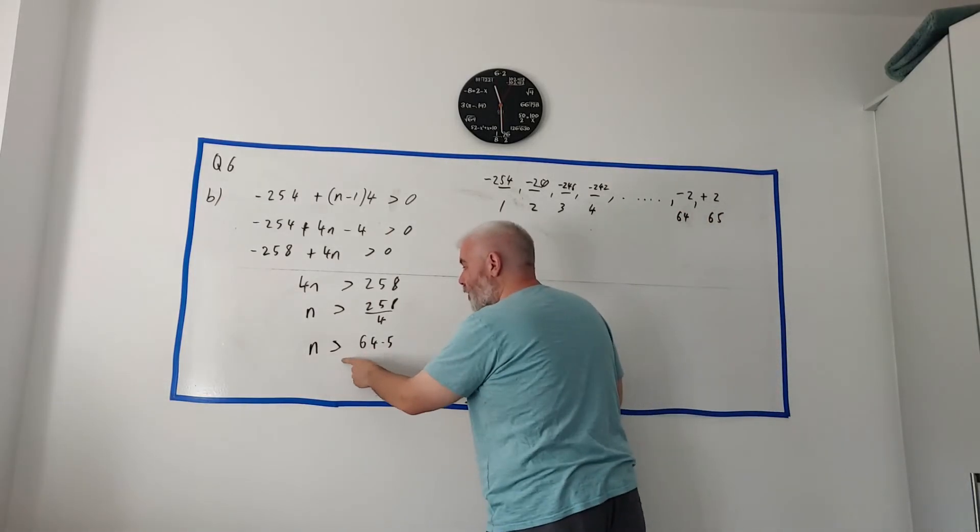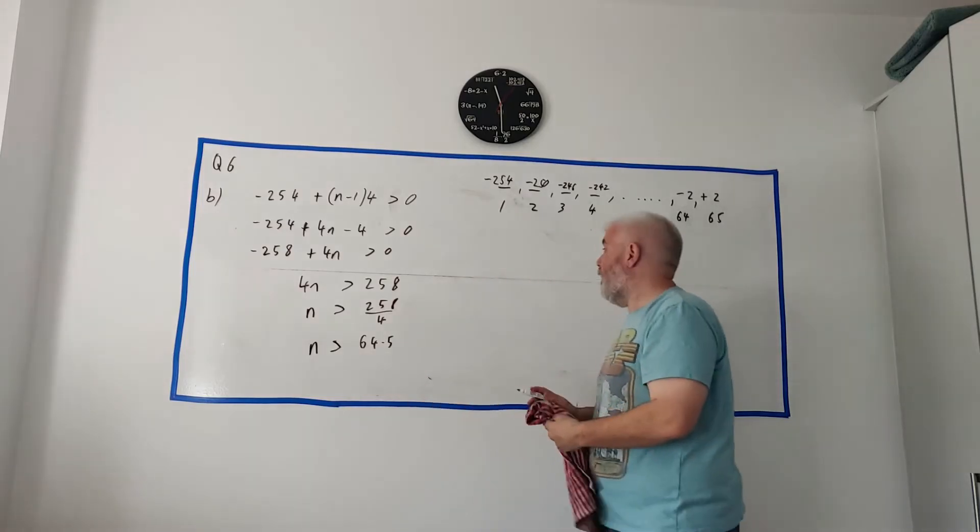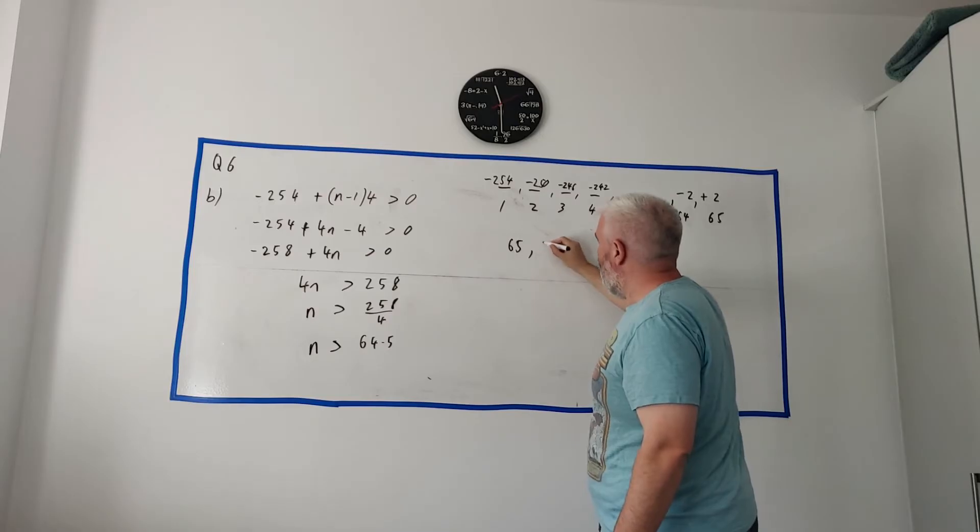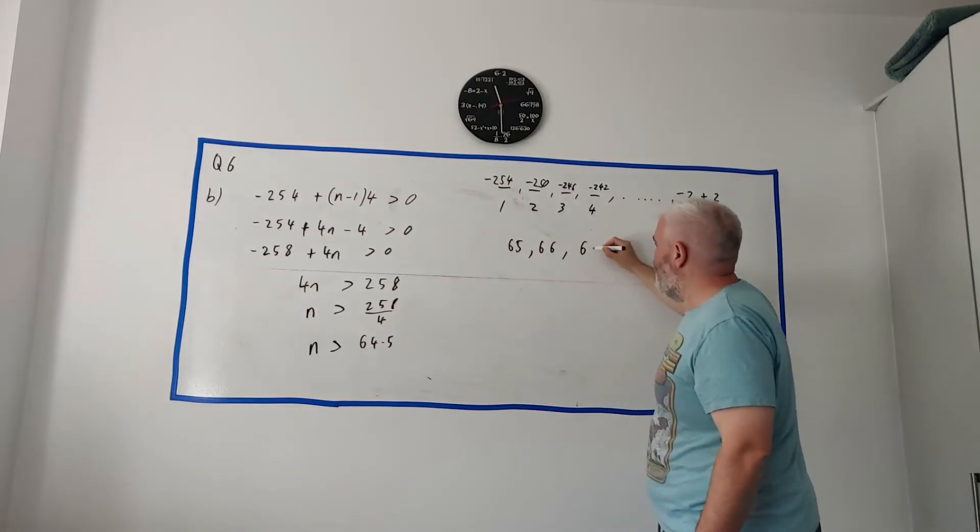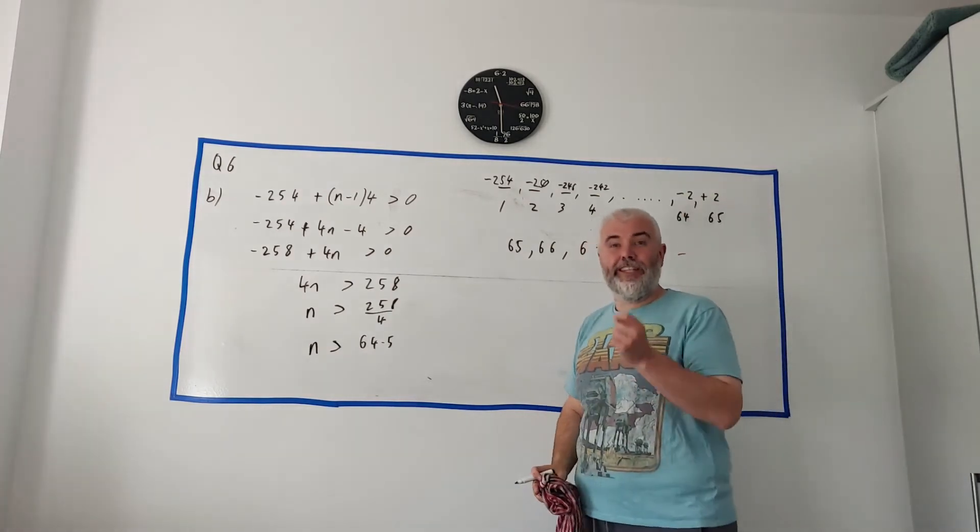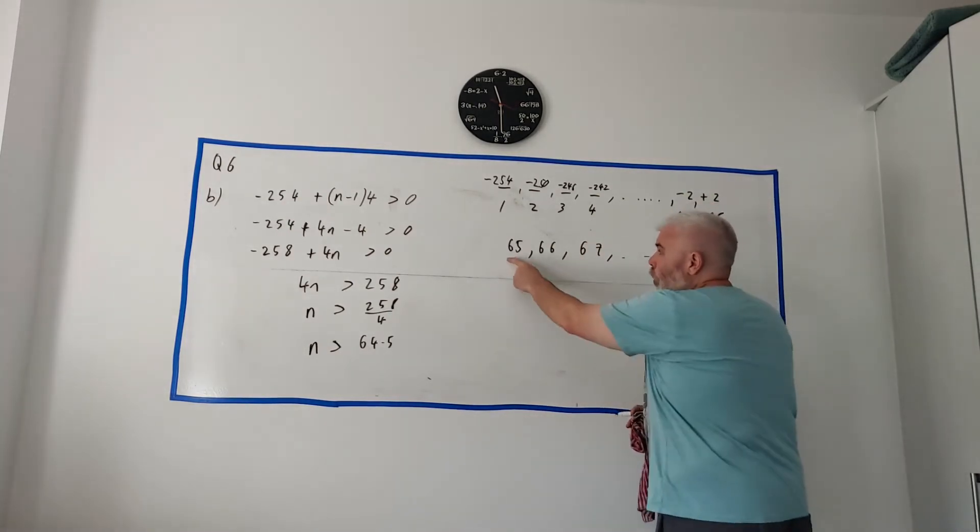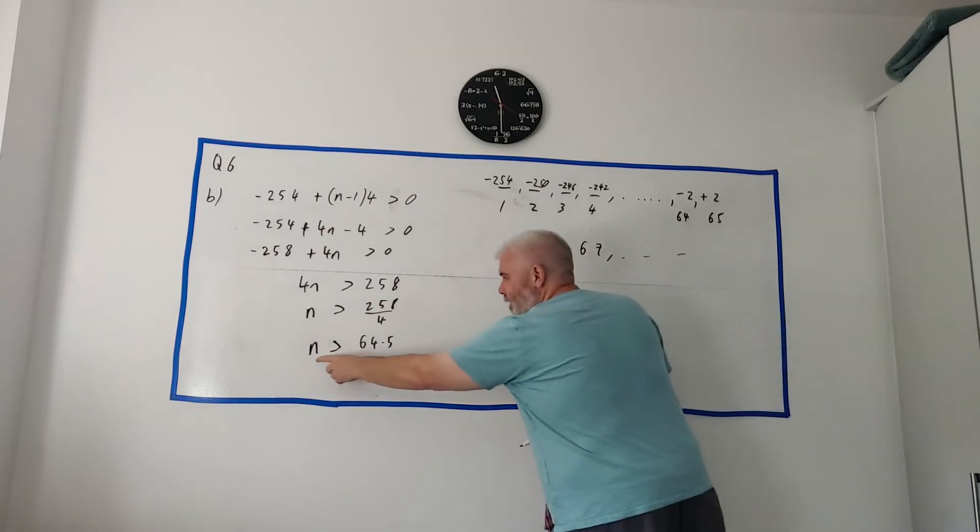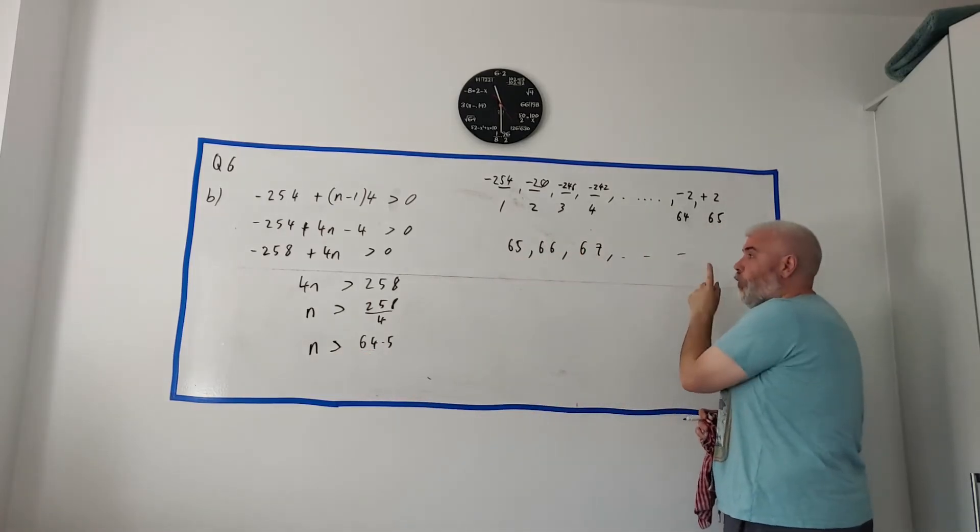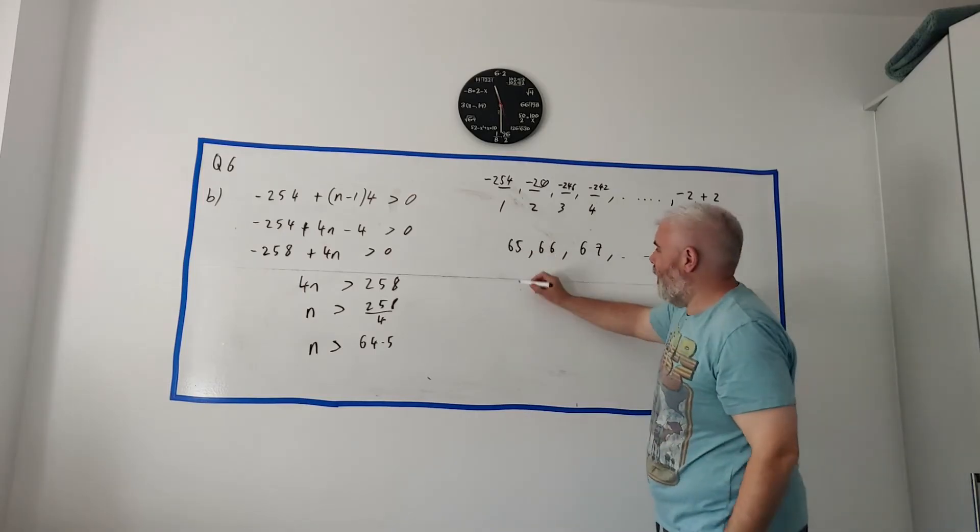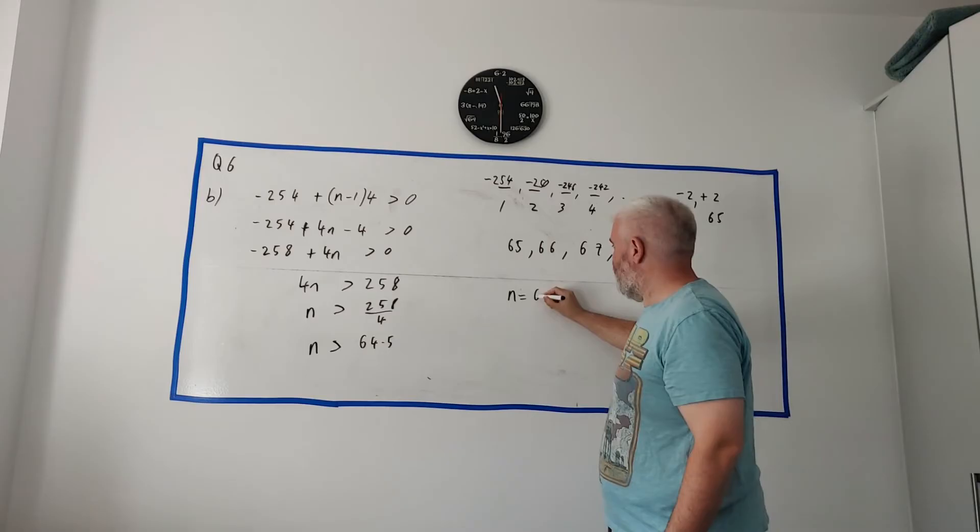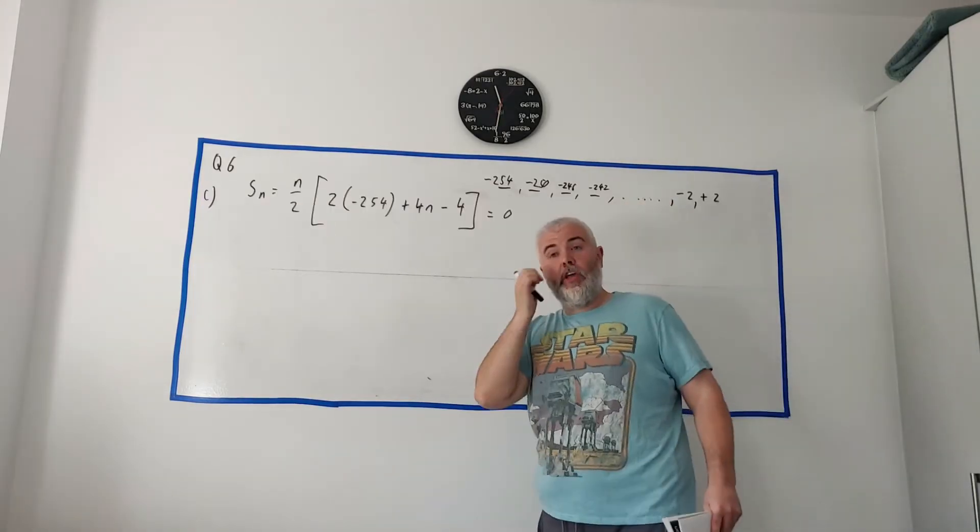So, if n is bigger than 64.5, then n must be either 65 or 66 or 67 and this is going on forever. But they also ask us to find the smallest answer. So, all of these are answers. n is bigger than 64.5. Well, all of these are correct. But, which is the smallest? And that's the answer is 65. So, maybe n equals 65. We could write as our answer.